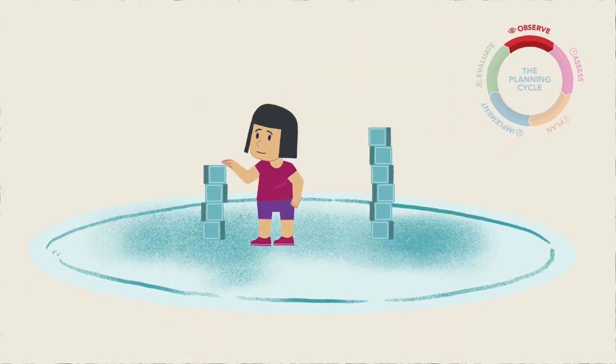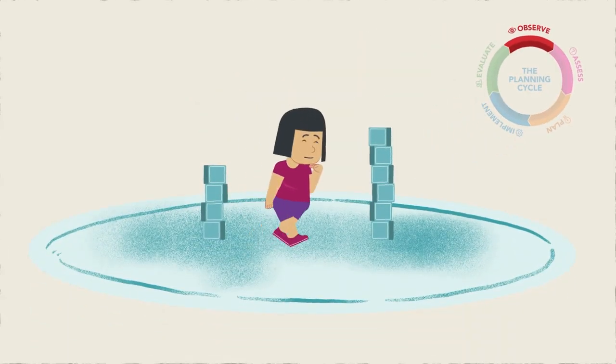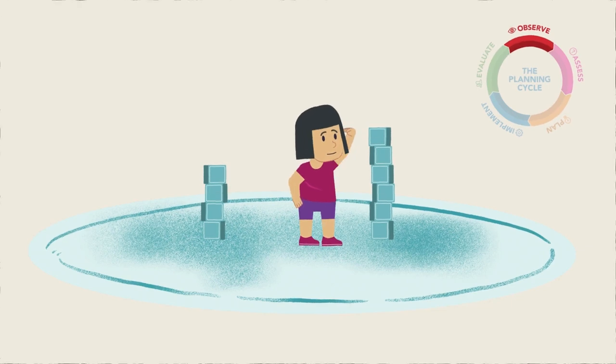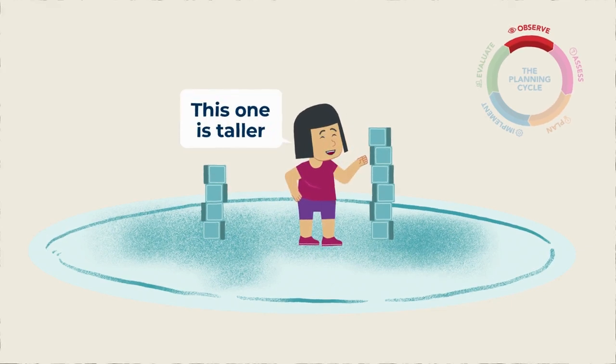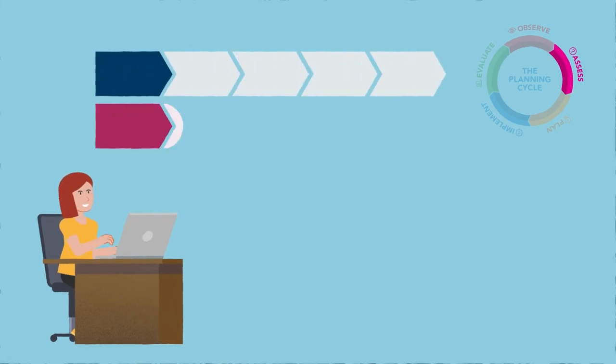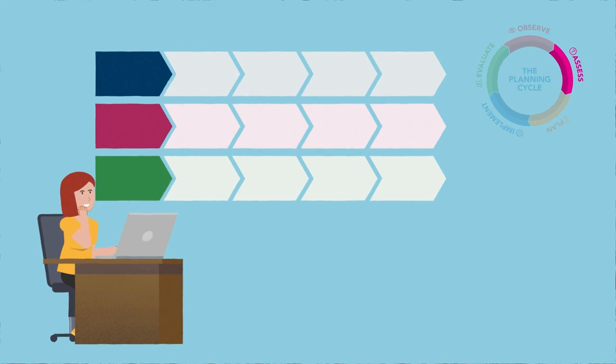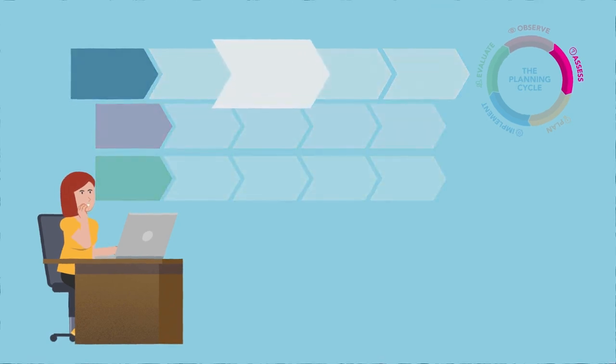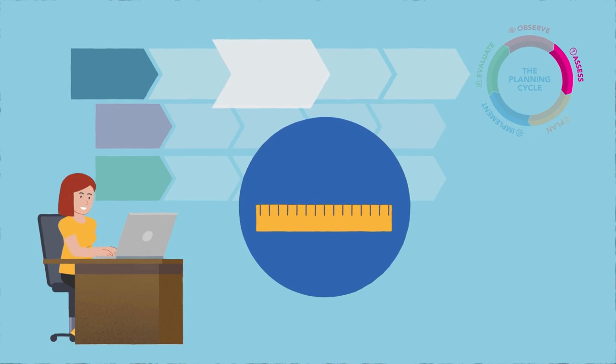An educator or teacher observes a child beginning to use measurement concepts in their play as they compare the heights of their towers. The educator or teacher then refers to the learning trajectories to assess the learning and to identify the indicator that best describes the child's skill. They identify that this example of learning falls under the mathematical thinking domain, more specifically the measurement and data subdomain.